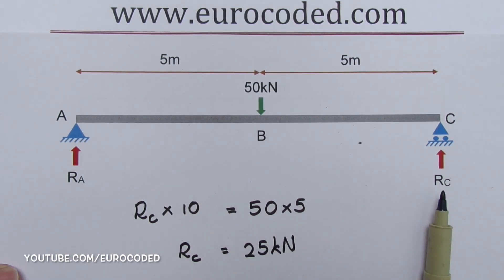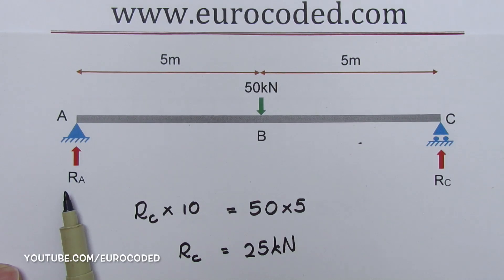Now due to the symmetry of our arrangement, we could argue that RA is also equal to 25 kilonewtons as well.